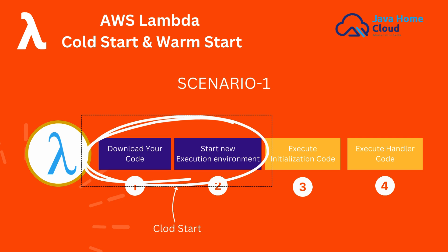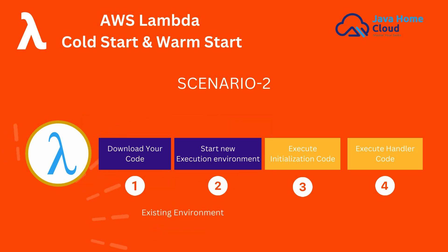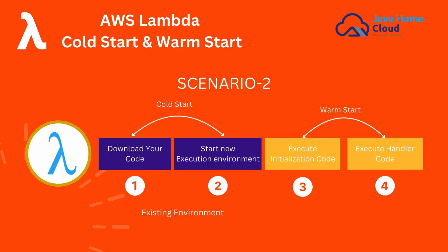In the second scenario, Lambda receives a call to execute and the existing environment is still there — it has not been destroyed. This means Steps 1 and 2 were already performed as part of a previous request. Because Lambda is reusing the existing environment, this is called a warm start. How long the existing environment is retained depends on several factors.